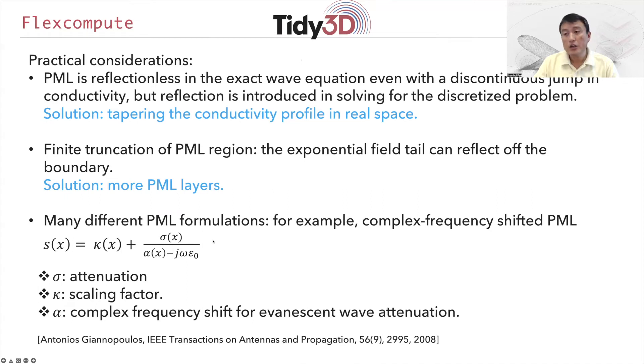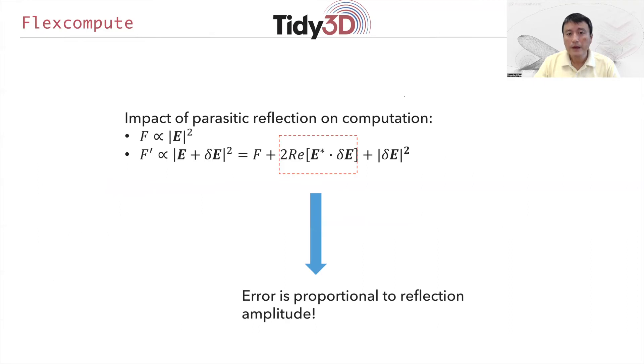Finally, here for simplicity I've in fact just talked about one type of PML. There is in fact a very large literature formulating PML for different purposes, and one of the popular choices is the complex frequency shifted PML with a different coordinate transformation factor to allow for evanescent wave attenuation as well.